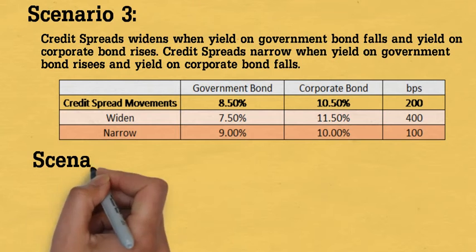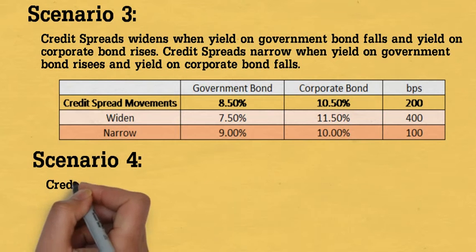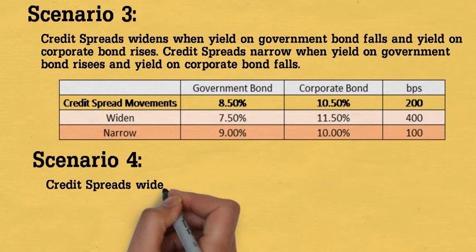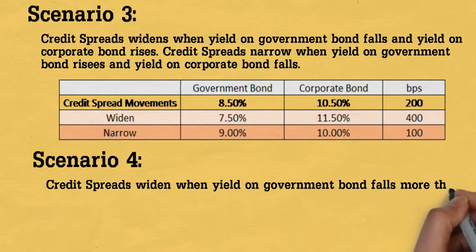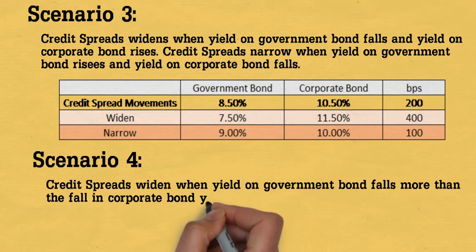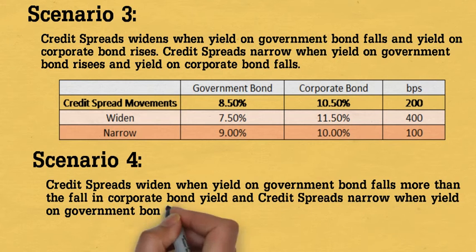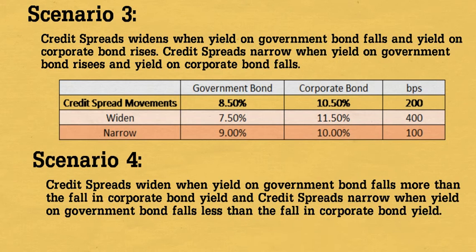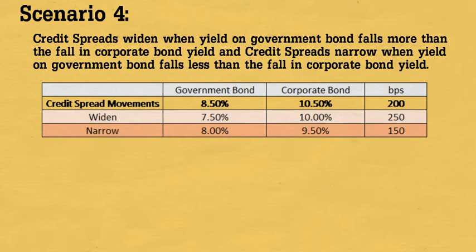Scenario 4. Credit spread widens when the yield on the government bond falls more than the fall in the corporate bond yield, and credit spread narrows when the yield on the government bond falls less than the fall in the corporate bond yield.